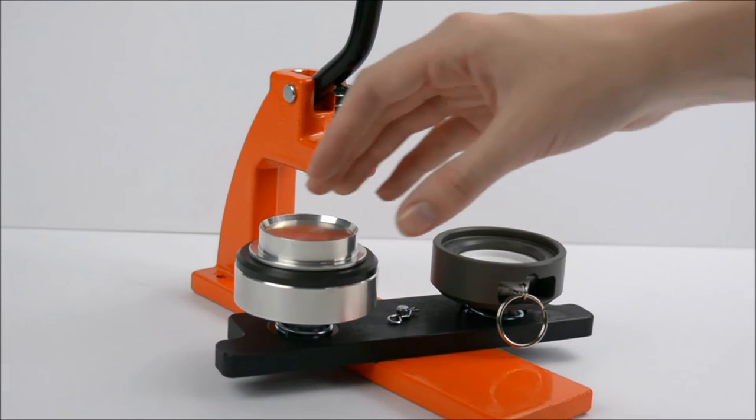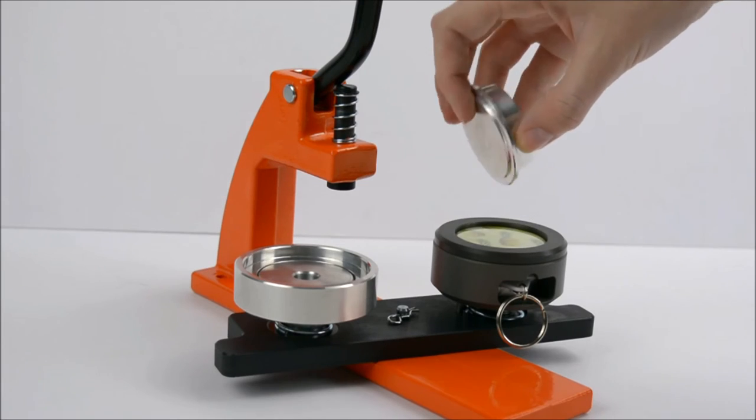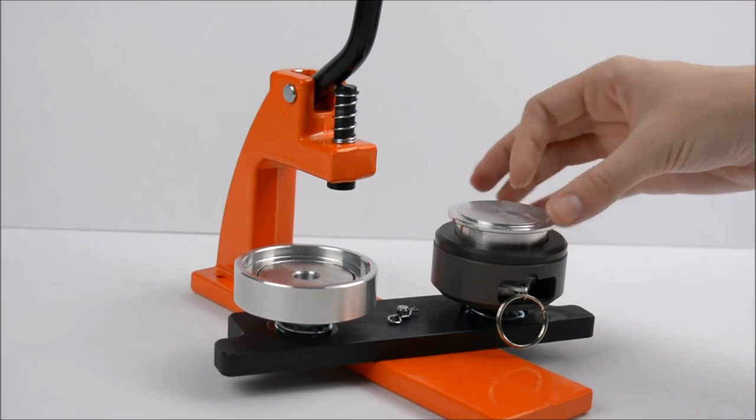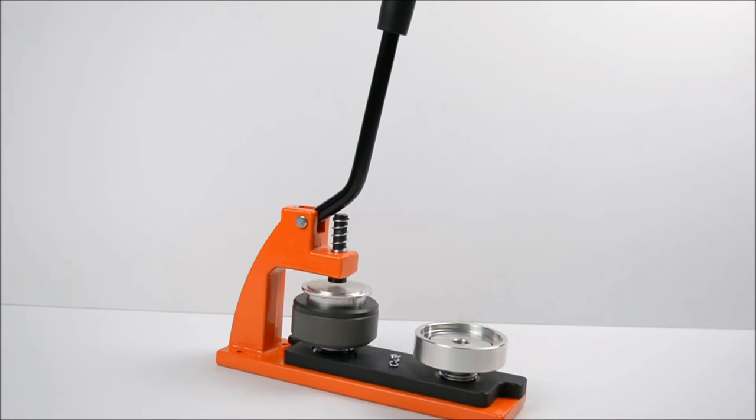Move the grey ring and top hat onto the second die, then turn the top hat upside down so it fits into the grey ring. Rotate the dies again so the second die is directly under the handle and pull firmly down.